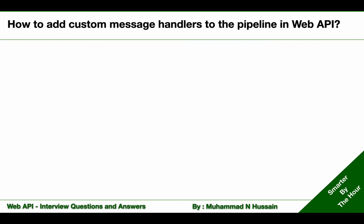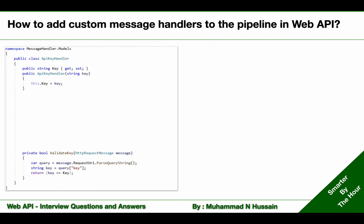To create a custom message handler, we need to first create a class. Based on our requirement, I have created an API key handler class. At the moment, that class contains a key and a method which will validate that key based on the key we get from the request.